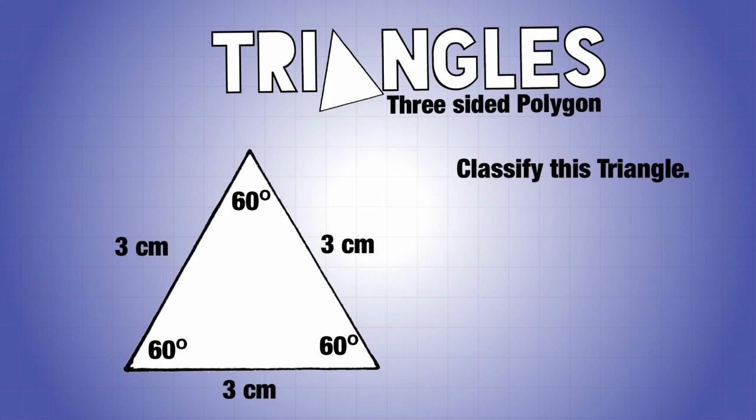Now when naming a triangle, you must name it by its angles and the length of its side. So as you can see in here, we have three acute angles and all the sides are equal, so we have an acute equilateral triangle.